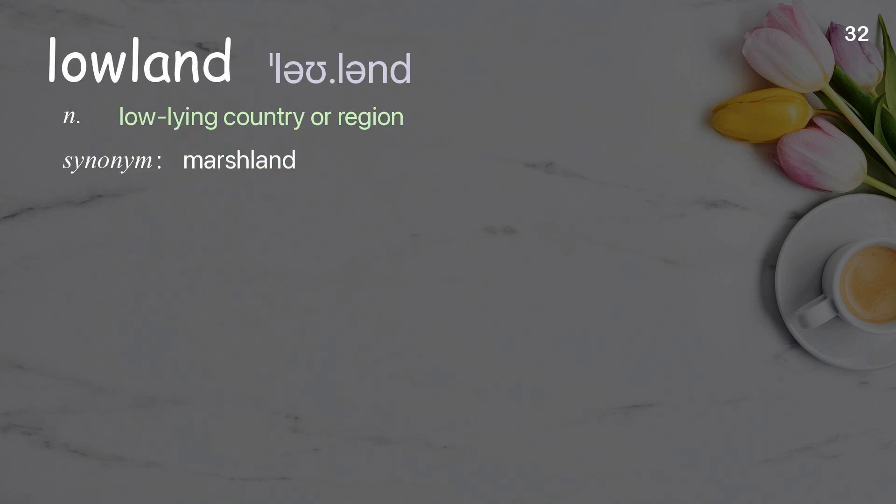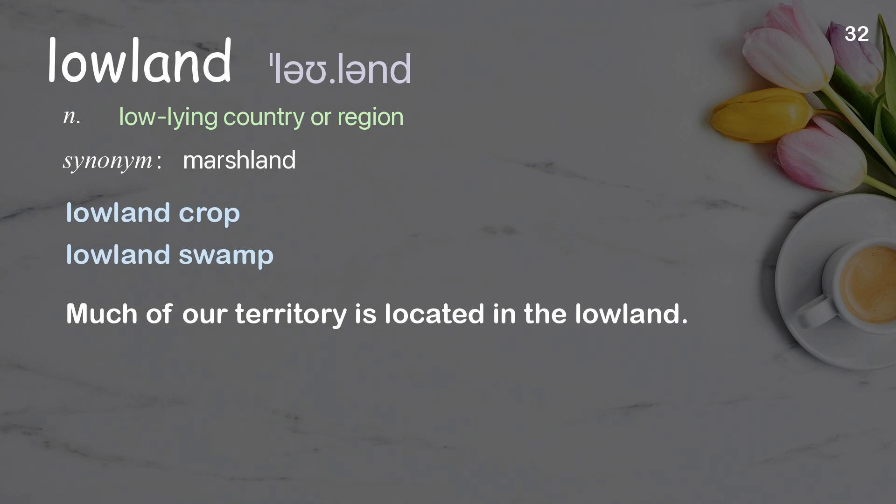Lowland: low-lying country or region. Examples: lowland crop, lowland swamp. Much of our territory is located in the lowland.